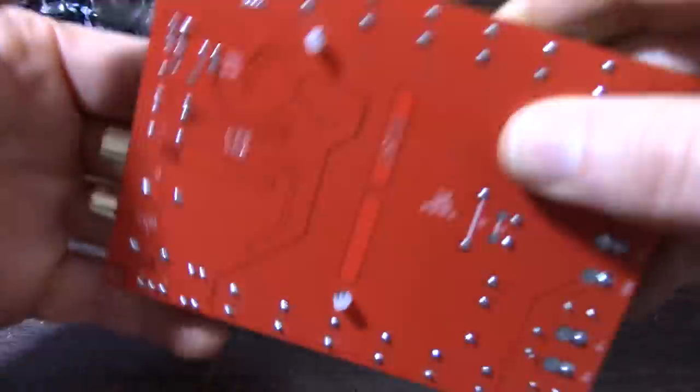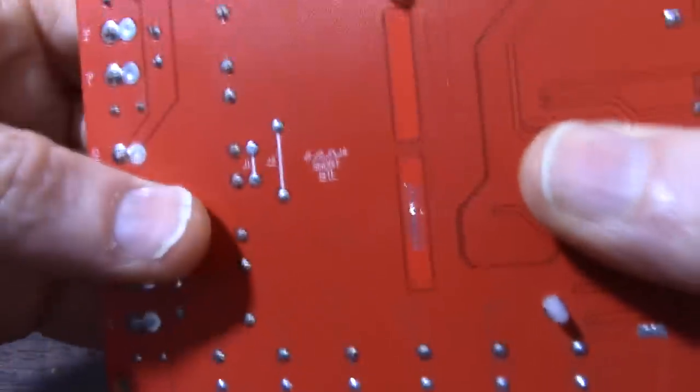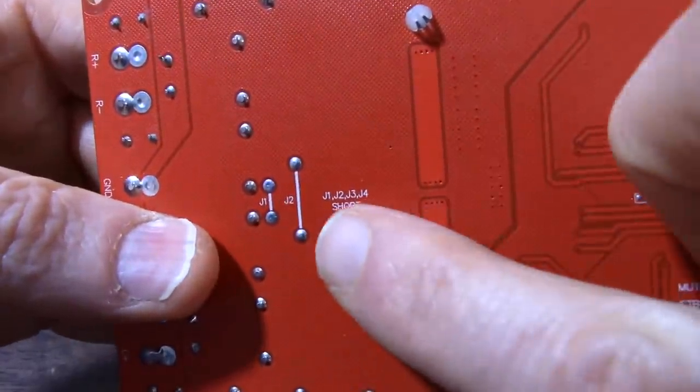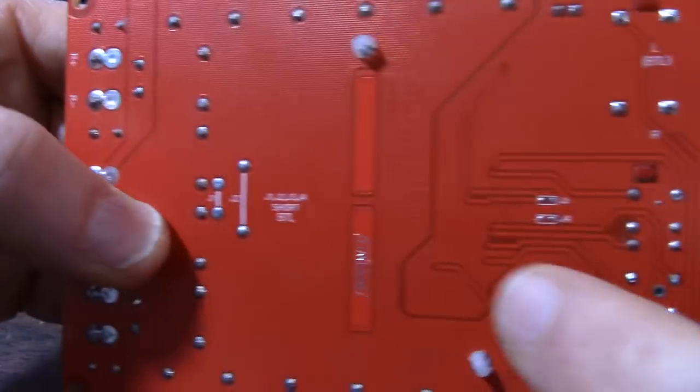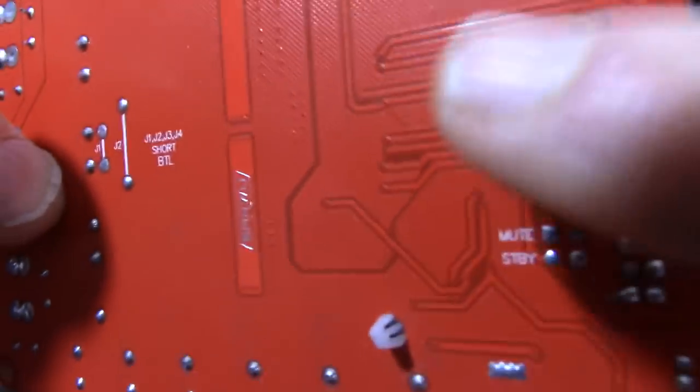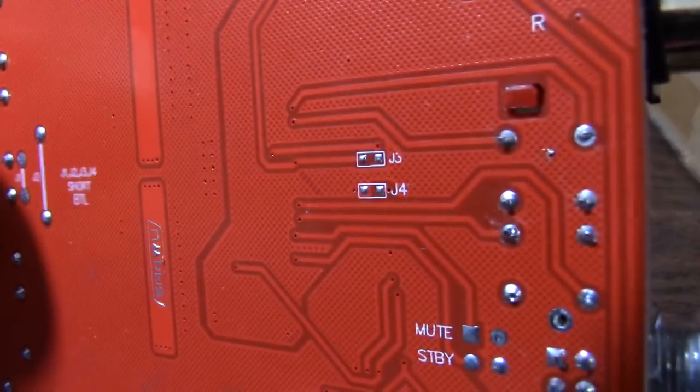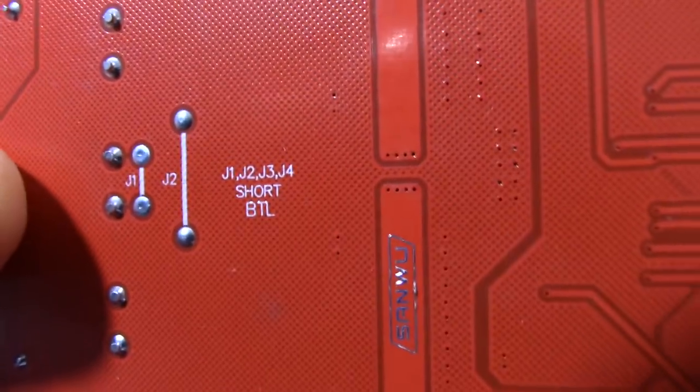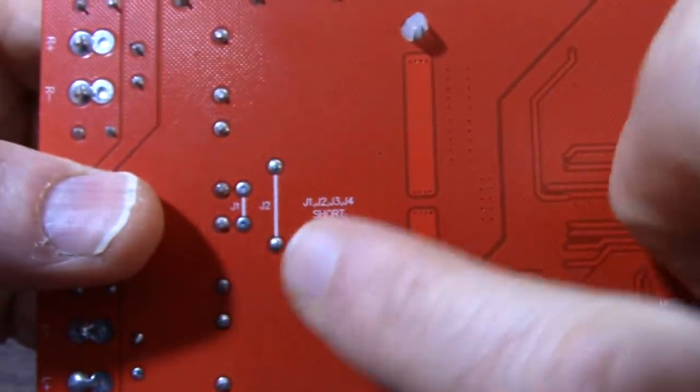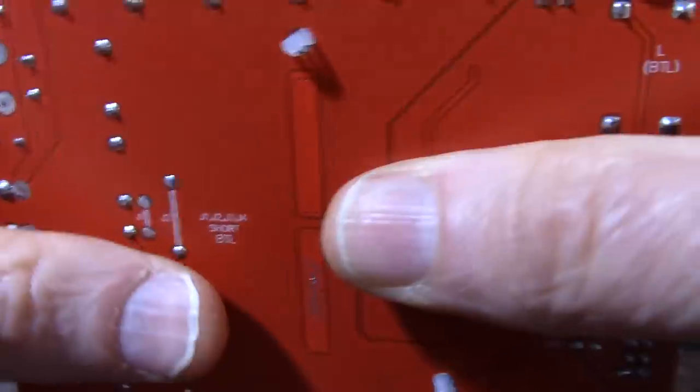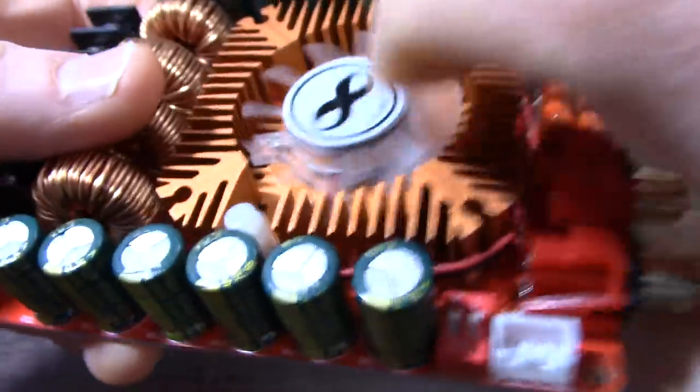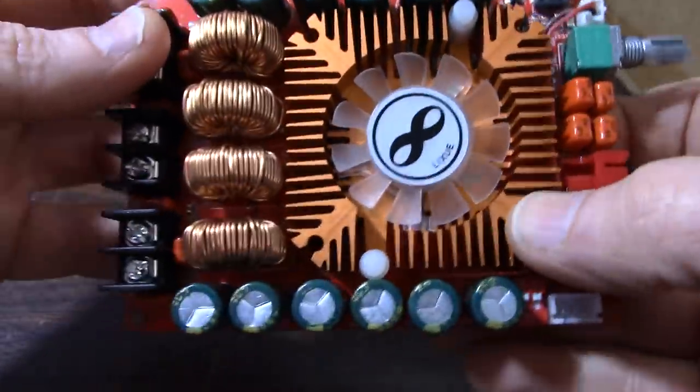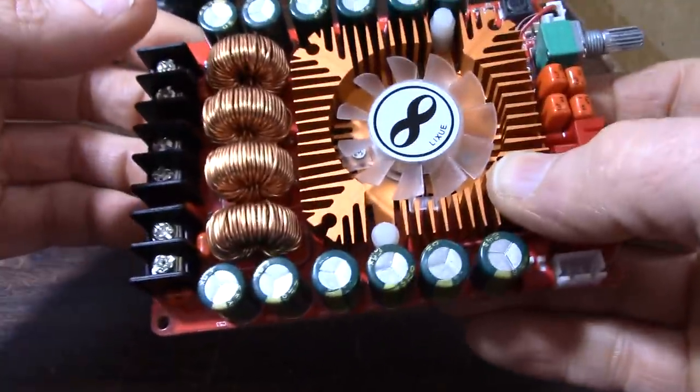On the back we have - it says to short these jumpers for BTL. You have these jumpers here and these jumpers here. Well, that's not quite correct. BTL means bridge-tied load, or used to mean balanced transformers, but in this context it's bridge-tied load.